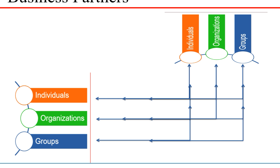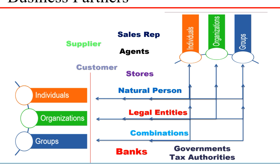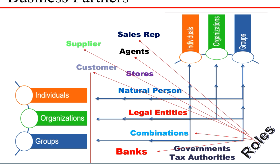So you have pretty much natural persons, legal entities, and combinations of legal entities. These may include employees, suppliers — whether a small individual supplier or a large legal entity or conglomeration — government authorities, banks, stores, agents, and obviously from a logistics point of view, suppliers and customers. They all play different roles in any business environment.